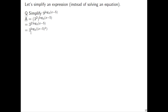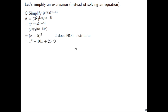So now we have 3 to the power log base 3 of quantity x minus 5 squared. Now that we have 3 to the and log base 3 of, there's a formula that lets us simplify that to x minus 5 quantity to the 2nd. Don't try to distribute the 2 — this is really x minus 5 times x minus 5. If you FOIL that out, you'll have x squared minus 5x minus 5x plus 25, and collecting like terms gives x squared minus 10x plus 25.